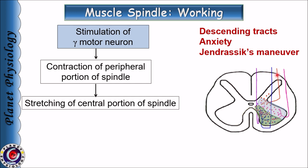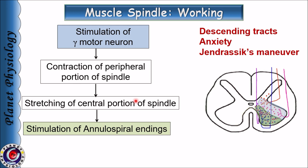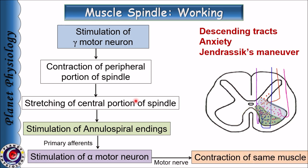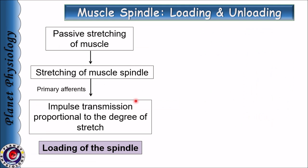Muscle spindle can also be stimulated via gamma motor neurons. Gamma motor neurons are usually under the influence of various descending tracts. They are also stimulated during anxiety or during performing gymnastic maneuvers. Stimulation of gamma motor neurons causes contraction of only the peripheral portions of the muscle spindle, which in turn causes stretching of the central part of the spindle where there are sensory endings. Stimulation of these sensory receptors causes stimulation of alpha motor neurons leading to muscle contraction.